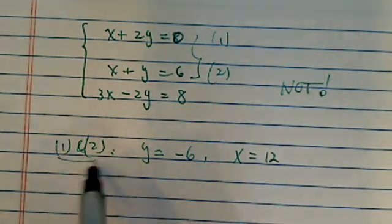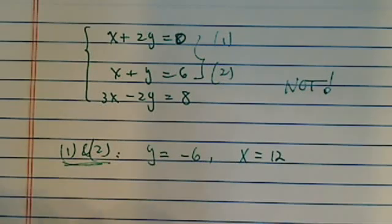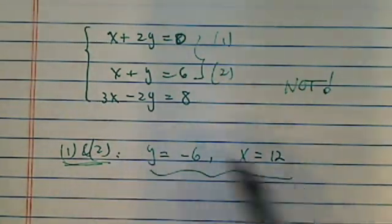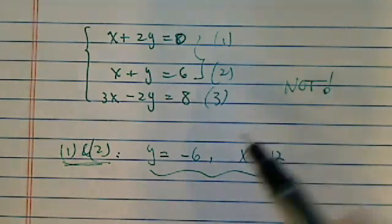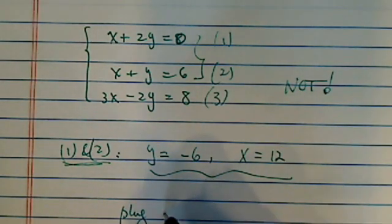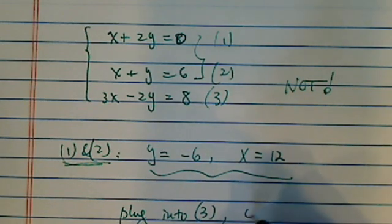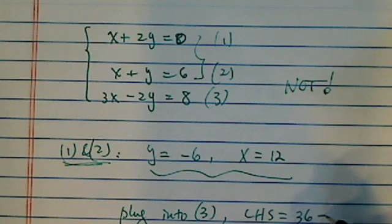Because that's the solution to equation 1 and 2. If you plug this solution back into equation 3, let's try it. Plug it into 3, you'll see that on the left-hand side, we have 12 times 3 is 36, minus,